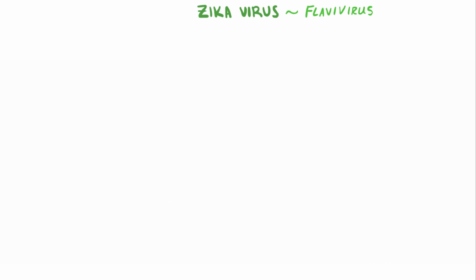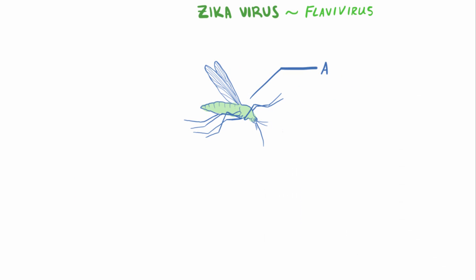The Zika virus is transmitted via mosquitoes in the Aedes genus. These bloodthirsty little guys can bite at night, but are mostly active during the daytime. Aedes mosquitoes are also the same ones that transmit chikungunya fever and dengue fever.